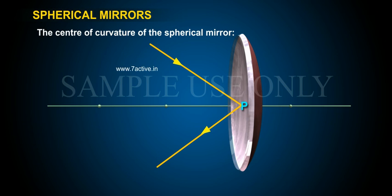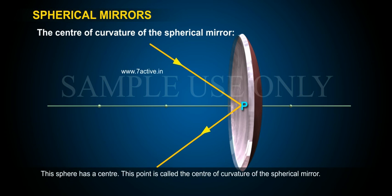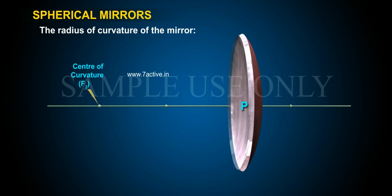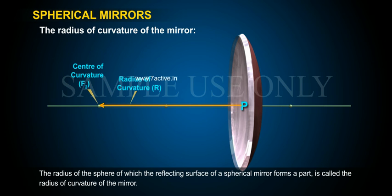The centre of curvature of the spherical mirror. The reflecting surface of a spherical mirror forms a part of a sphere. The centre of that sphere is called the centre of curvature of the spherical mirror. The radius of the sphere, of which the reflecting surface of a spherical mirror forms a part, is called the radius of curvature of the mirror.